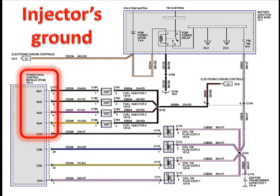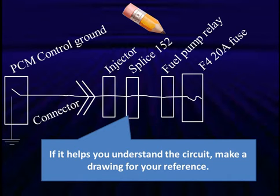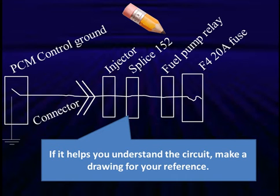What we understand now, after looking at all this, is that the PCM is going to supply ground to turn on the fuel injectors. If we have a problem with diagrams spread all over the place — and this is a good example — take a pencil and make your own rough sketch. If we take all those pages, we start at fuse 4, which is a 20-amp fuse. It went from there to the fuel pump relay, then to splice 152, then to the injector connector, then to PCM ground. If it helps you understand better, rather than try to use four or five pages, draw this out so you have a good reference.